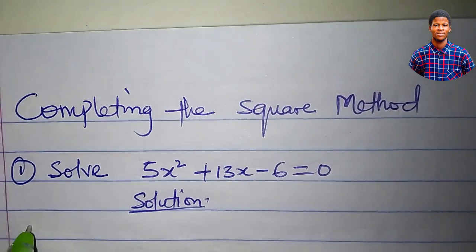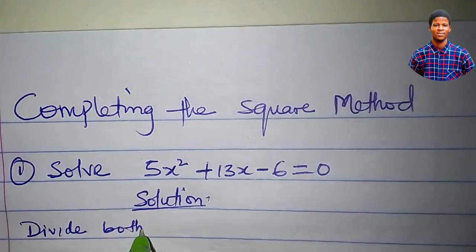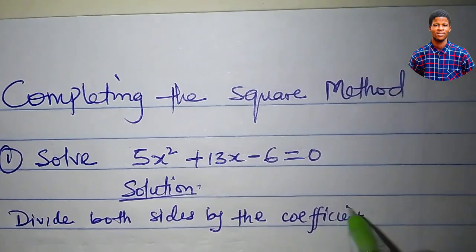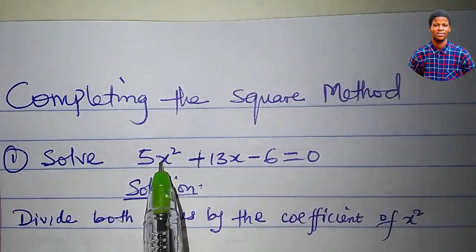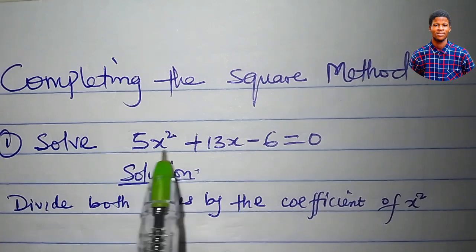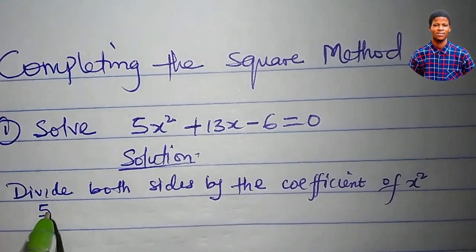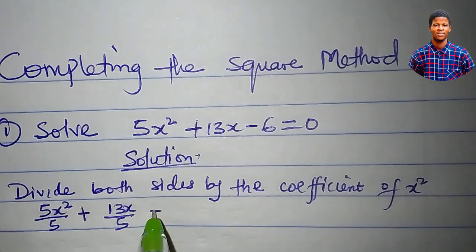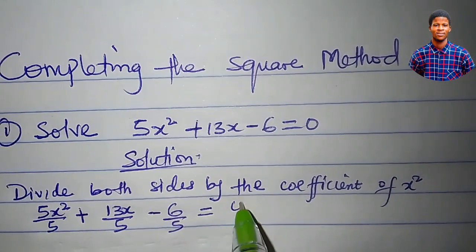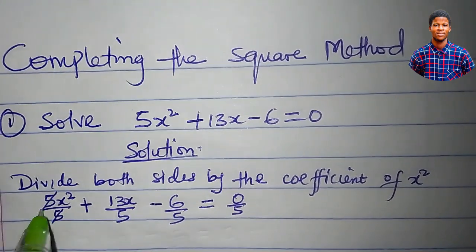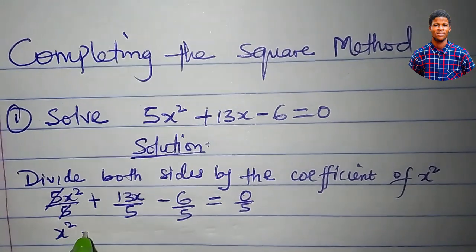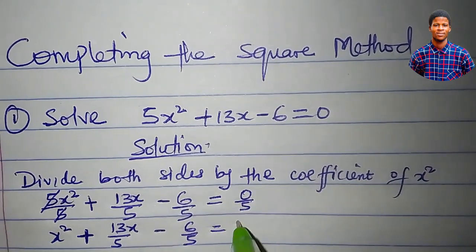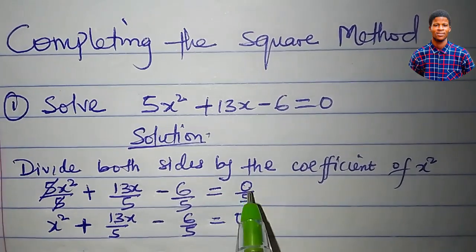The first thing to do is to divide both sides by the coefficient of x squared. The coefficient of x squared here is 5, so I will divide this equation through by 5. That is 5x squared all over 5, plus 13x all over 5, minus 6 all over 5, is equal to 0 all over 5. 5 cancels 5, so we have x squared plus 13 over 5 of x minus 6 all over 5 equal to 0, because 0 over 5 is 0.